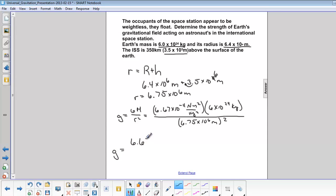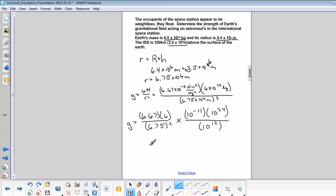So separate our numbers. 6.67 times 6 divided by 6.75 squared times 10 to the negative 11th, times 10 to the 24th divided by 10 to the 6th squared, which we know is 10 to the 12th. So here we get 0.878 times 10 to the 1st power. So move our decimal place over and make this 0, and we get 8.78 meters per second squared.